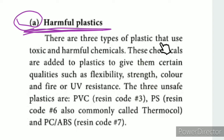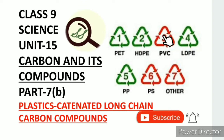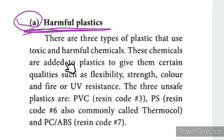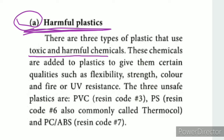There are three types of plastic that use toxic and harmful chemicals. There are a total of 7 resin codes. These chemicals are added to plastic to give them certain qualities such as flexibility, strength, color, and fire or UV resistance.